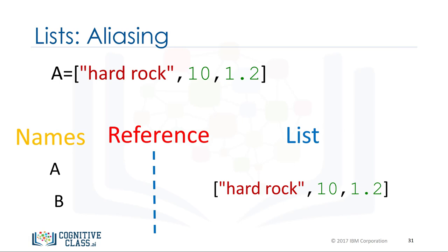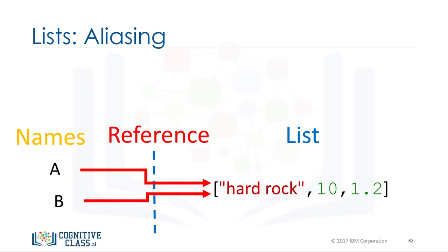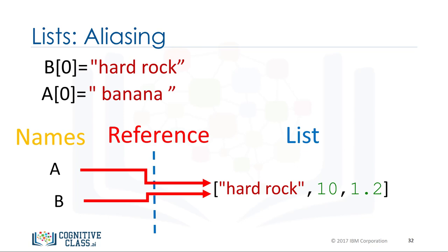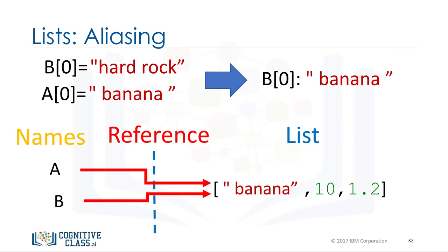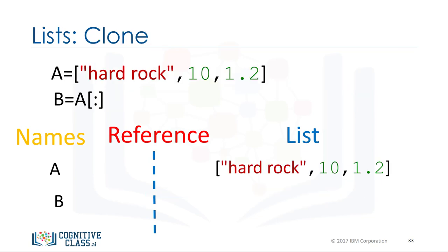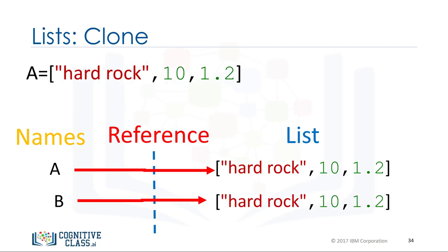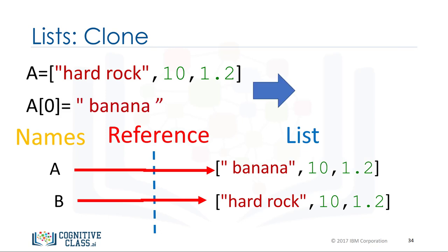When we set one variable b equal to a, both a and b are referencing the same list. Multiple names referring to the same object is known as aliasing. If we change the first element in a to banana, we get a side effect — the value of b will change as a consequence, because a and b are referencing the same list. You can clone list a using the following syntax, so variable b references a new copy of the original list. Now if you change a, b will not change.